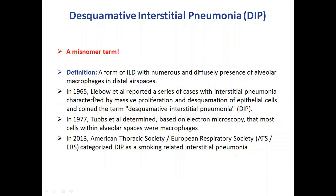Initially in 1965, Dr. Liebow and others reported case series in which they observed desquamation of epithelial cells and coined the term desquamative interstitial pneumonia. However, in 1977, Dr. Katzenstein and others determined via electron microscopy that these desquamative cells are not epithelial cells but are macrophages. In 2013, the American Thoracic Society and the European Respiratory Society categorized DIP as a smoking-related interstitial pneumonia.